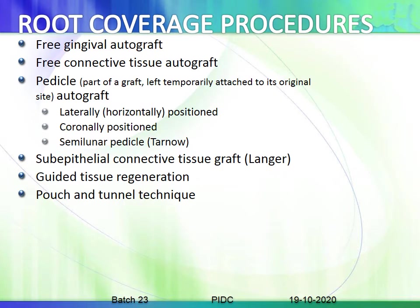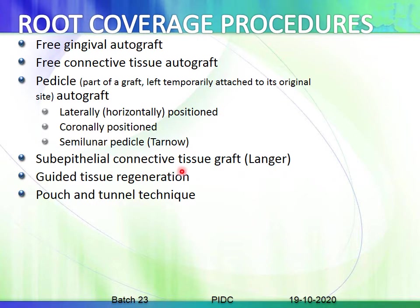Root coverage procedures include: the free gingival autograft, described by John; free connective tissue autograft; pedicle graft — which is a part of a graft left temporarily attached to its original site, and can be a lateral, coronal, or semilunar pedicle; subepithelial connective tissue graft as described by Langer; guided tissue regeneration; and the pouch and tunnel technique.